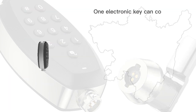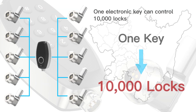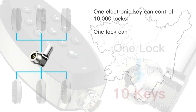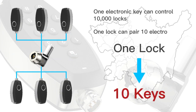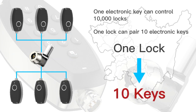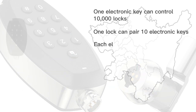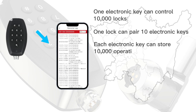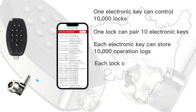One electronic key can control 10,000 locks. One lock can be paired with 10 electronic keys. Each electronic key can store 10,000 operation logs, and each lock can store 32 operation logs.